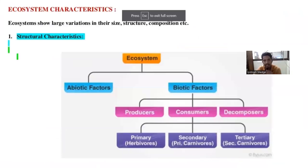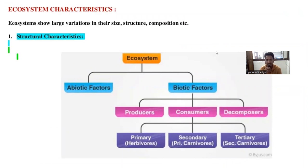When we study the ecosystem, we study the structural characteristics of the ecosystem. The ecosystem is divided into two parts: abiotic factors — such as sunlight, soil, water, and air — and biotic factors. Biotic factors are divided into three important parts: the first is the producer, the second is the consumer, and the third is the decomposer.